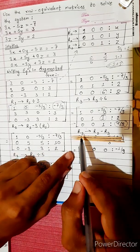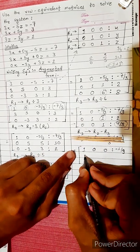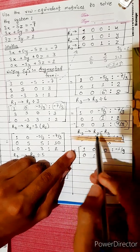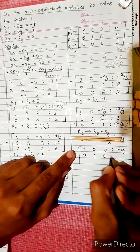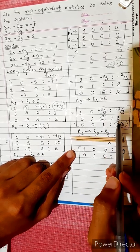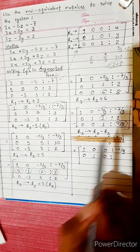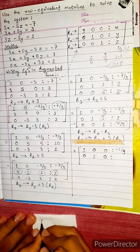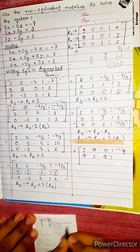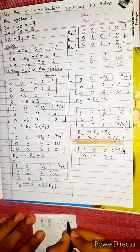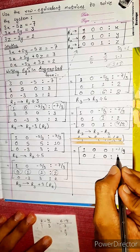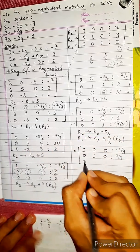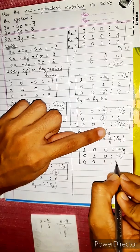Now R2 changes into R2 minus R3. 0 - 0 = 0, 1 - 0 = 1, 1 - 1 = 0, and 2 - 4/3 = 6/3 - 4/3 = 2/3. So the new R2 is [0, 1, 0 | 2/3]. The matrix is now in reduced row echelon form with R1: [1,0,0|-1/9], R2: [0,1,0|2/3], R3: [0,0,1|4/3].